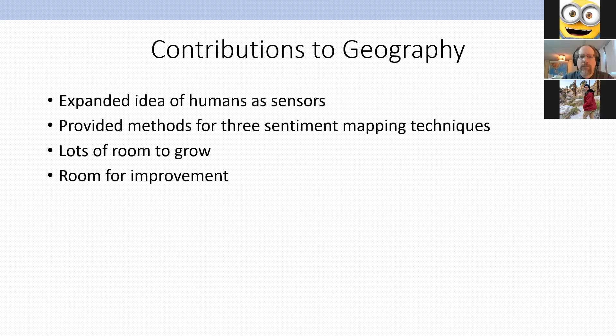Those were the three types of sentiment maps I created. In terms of conclusions and contributions to geography and social sciences: my thesis builds upon and expands the idea of humans as sensors, demonstrating its power using freely accessible data. I provided methods for three different sentiment mapping techniques — the raw sentiment map, the exaggerated sentiment map, and the sentiment cluster maps — and the machine learning classifiers agreed strongly enough that I had confidence the results were representing the Twitter data.